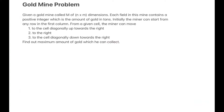Initially the miner can start from any row in the first column. From a given cell the miner can move to the cell diagonally up towards the right, to the right, or to the cell diagonally down towards the right. So we have to find out the maximum amount of gold which he can collect.